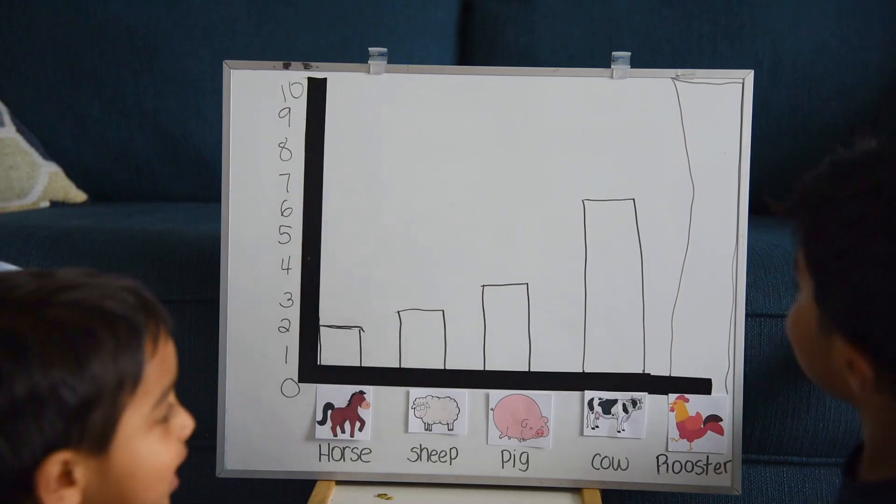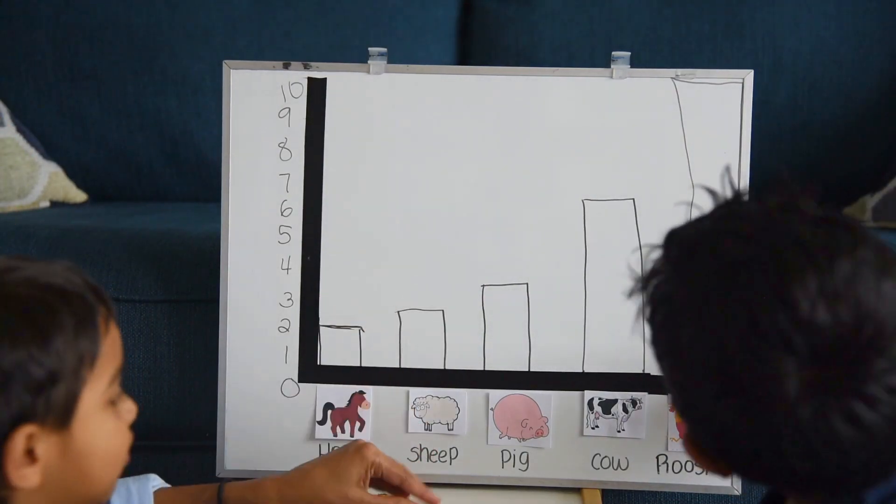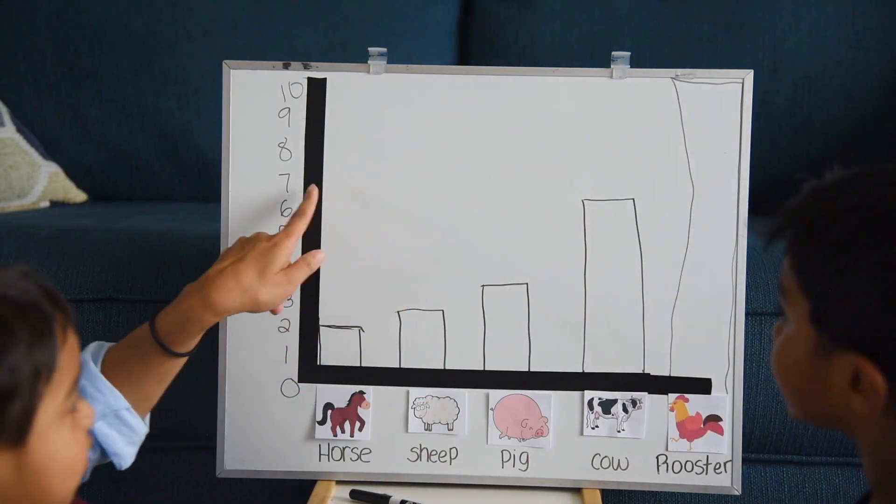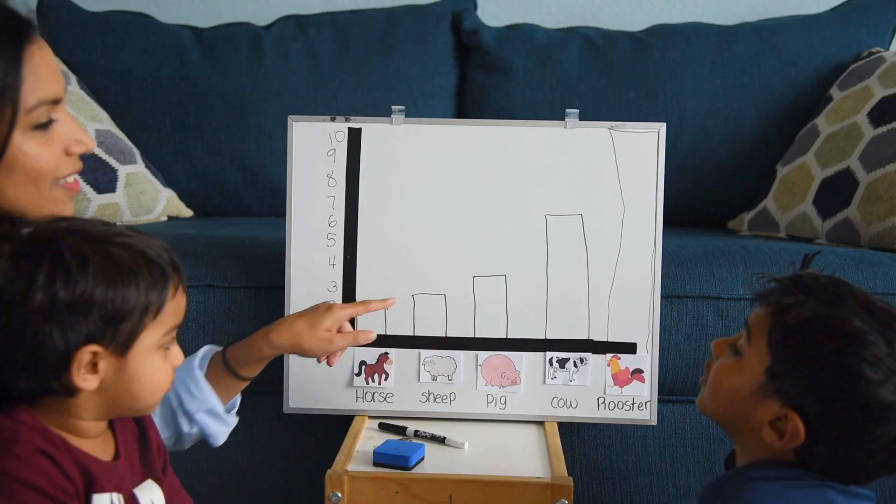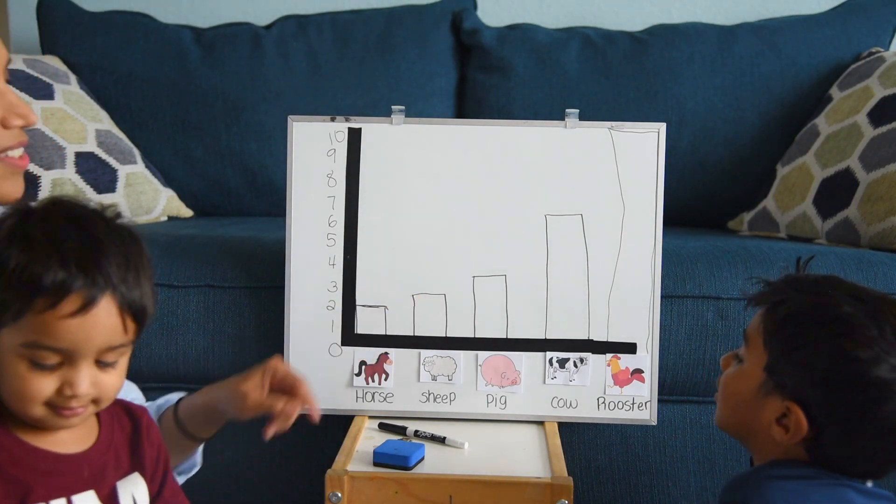Now look at this graph. Let's read the graph. Let's look at what this bar means, what these numbers mean, and let's look at these animals. How many cows are in this farm? Seven. Seven cows. How many roosters are in this farm? Ten. How many sheep are in this farm? Three.